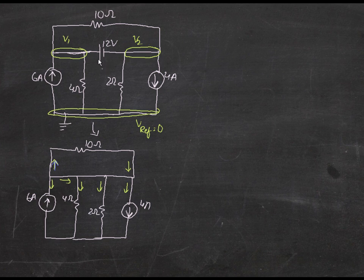You could do a source conversion, but that would be more complicated because source conversion is not possible here — you would need a resistor connected to it. Following the rules of source conversion, you have to have one resistor connected to it so that you can convert it into a current source. That's why the alternative is supernode analysis.